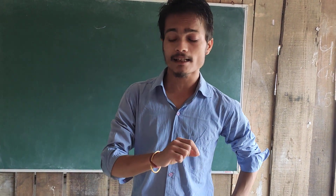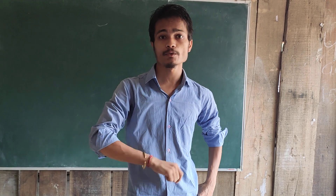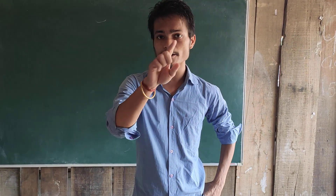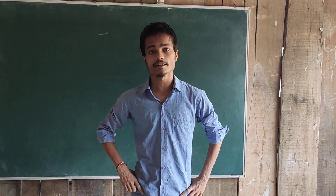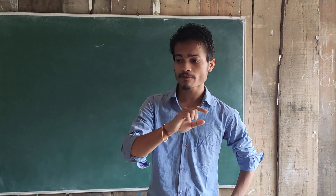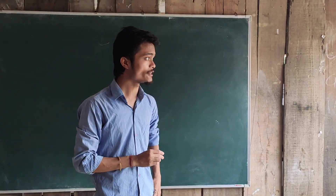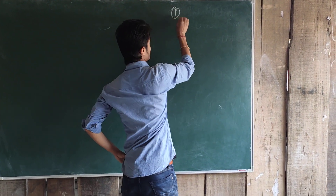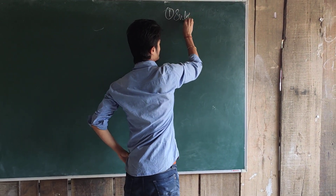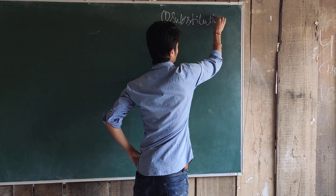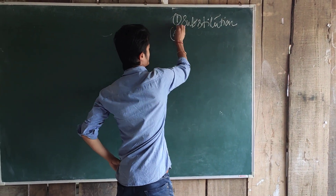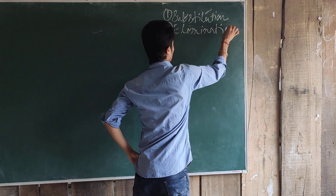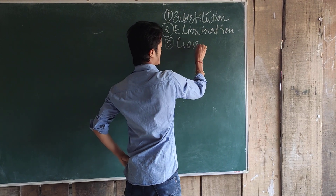In this video, we are going to revise the exercise which we have been doing just before the lockdown started. As the students, if you remember, we have been doing Chapter 3, Pair of Linear Equations in Two Variables, and we have been discussing that the Pair of Linear Equations in Two Variables can be solved by three methods: number one, substitution method; number two, elimination method; and number three, cross-multiplication method.